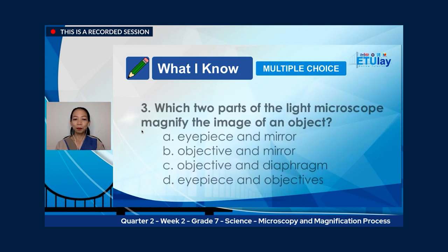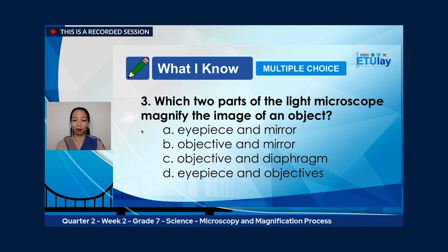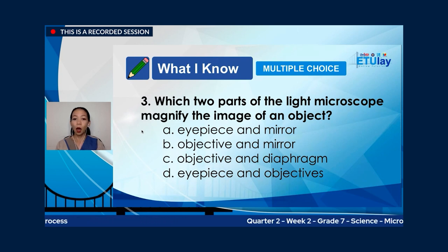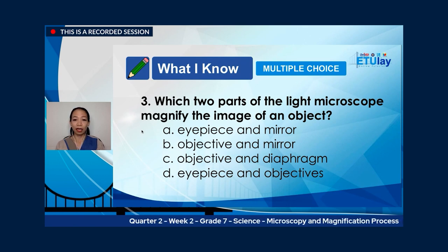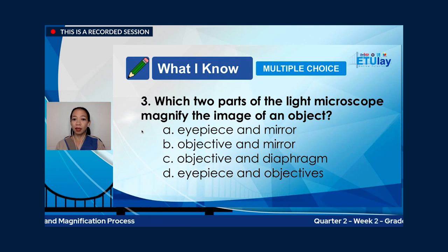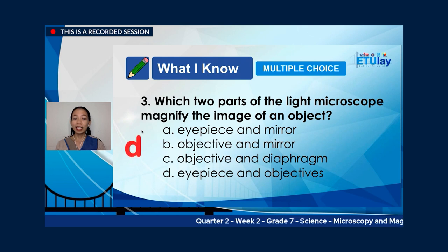Number three: which two parts of the light microscope magnify the image of an object? A, eyepiece and mirror; B, objective and mirror; C, objective and diaphragm; or D, eyepiece and objectives? The correct answer is letter D, eyepiece and objectives.